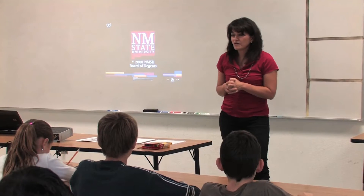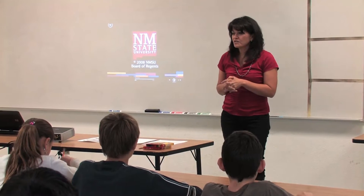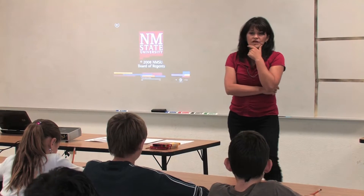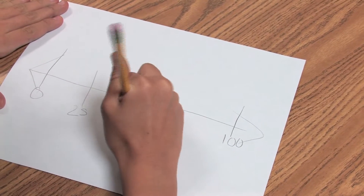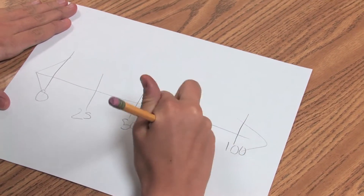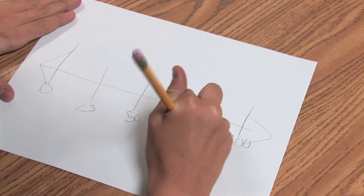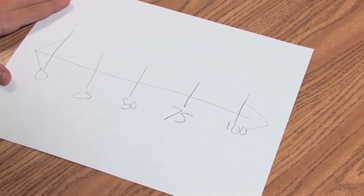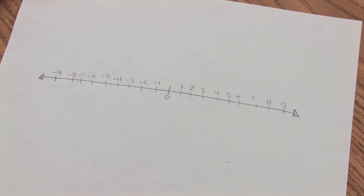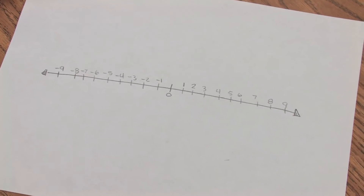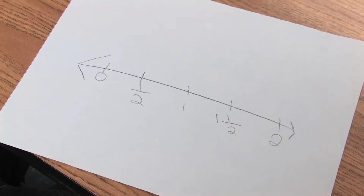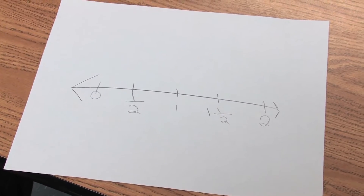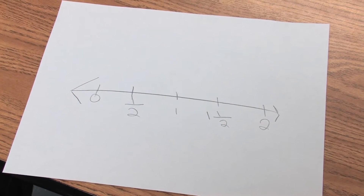First of all, tell me what you have on your number line. It goes from 0 to 100 and has lines in between that mark 25, 50, and 75. It goes from 1 to 9 and then negative 1 to 8. Another goes from 0 to 2 and in between it has one half, 1, and 1 and a half.